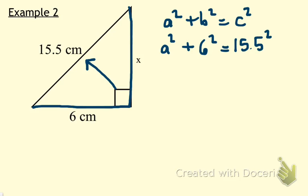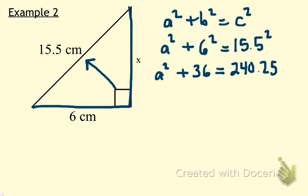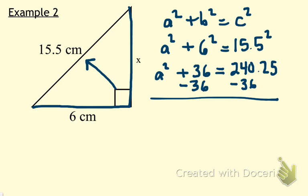Once I square my B and C terms, I'm going to have A squared plus 36 is equal to — and I don't know 15.5 squared off the top of my head, so when I punch it into the calculator, I get 240.25. This time we've got an extra step involved. We cannot calculate the square root of A until we have our A squared term isolated. That means I need to do an inverse operation to get rid of that plus 36, so I'll subtract 36 on both sides. A squared is isolated on the left, and 240.25 minus 36 equals 204.25.